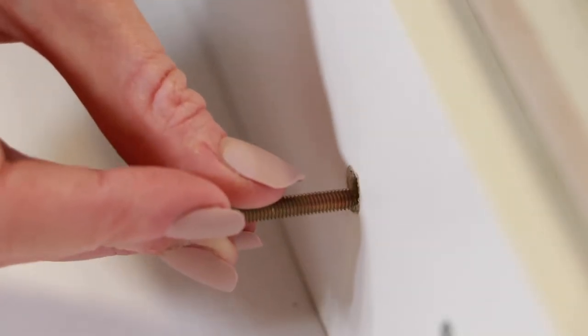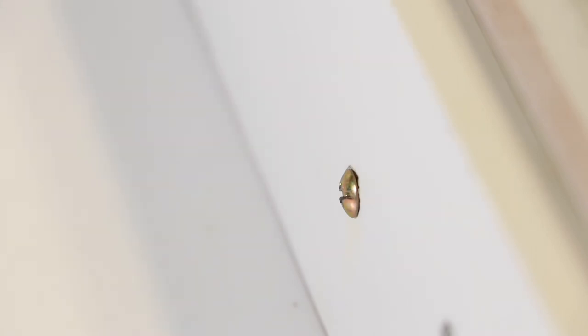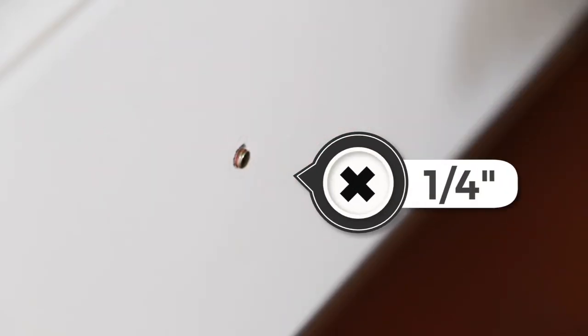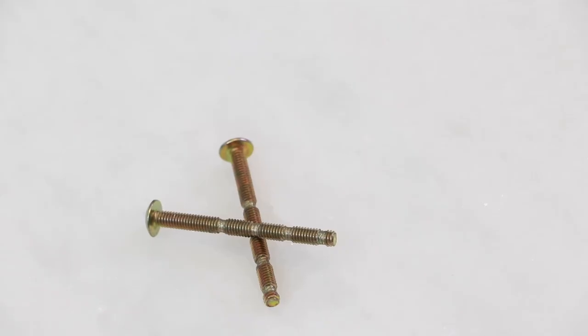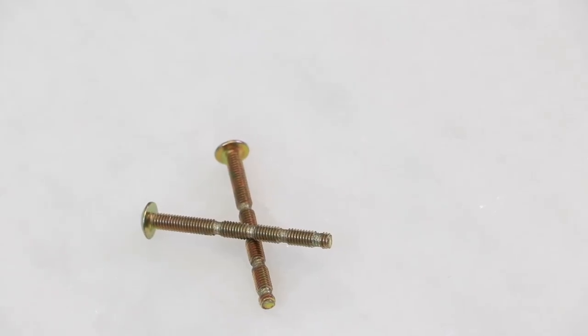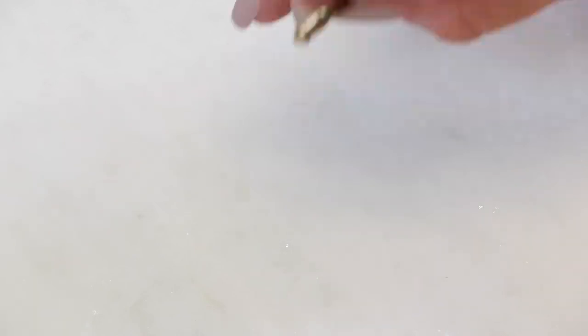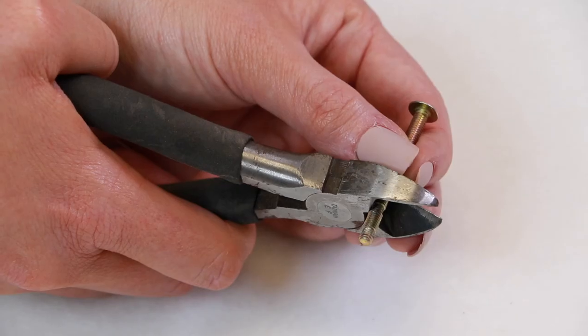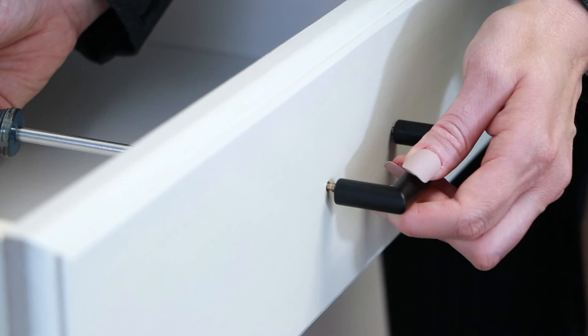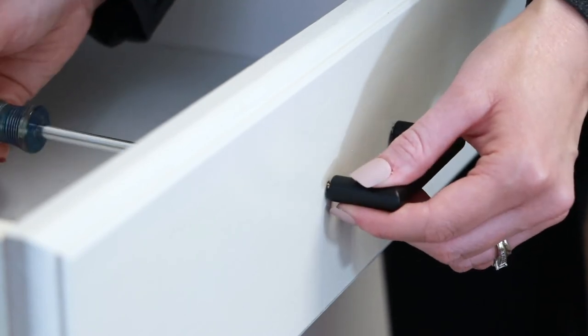Once your holes are drilled, insert the screw into the hole from the back of your drawer front. The screw needs to stick out from the drawer front about one fourth of an inch. If the screw is too short, use the included breakaway screws. Use a pair of wire cutters or pliers to break the screw to the correct length. Careful not to bend the screw or damage the threads.